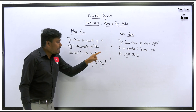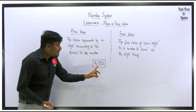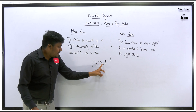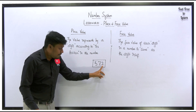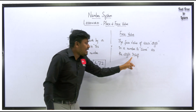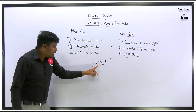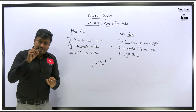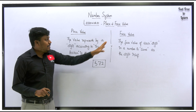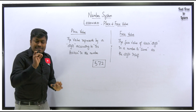The face value of each digit in a number is the same as the digit itself. For example, if they ask what is the face value of 2, the answer is 2. The face value of 7 is 7, and the face value of 5 is 5. So face value is easy to find — the number itself is called the face value.